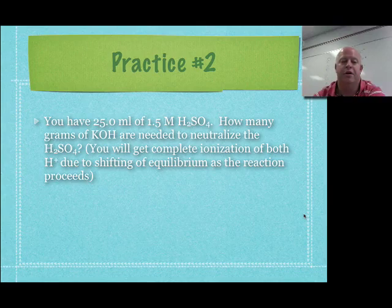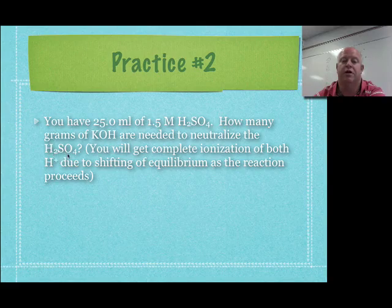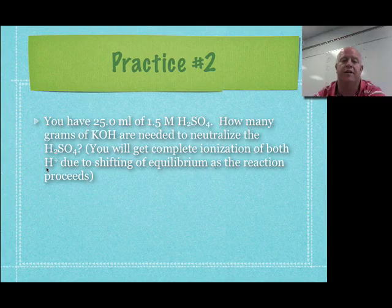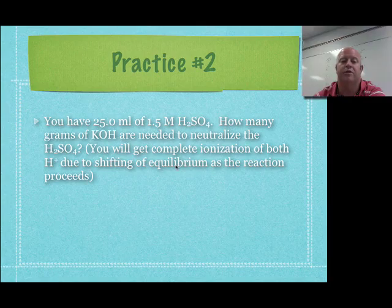Here's the second review problem. You have 25 milliliters of 1.5 molar sulfuric acid. How many grams of KOH are needed to neutralize H₂SO₄? Because we're reacting it with a strong base, you get complete ionization of both hydrogen ions, so we can assume both hydrogens ionize. We don't need an ICE table or any equilibrium work here — just get your chemical equation and make sure you have the correct mole ratio from your balanced equation. Pause the video and work through it.